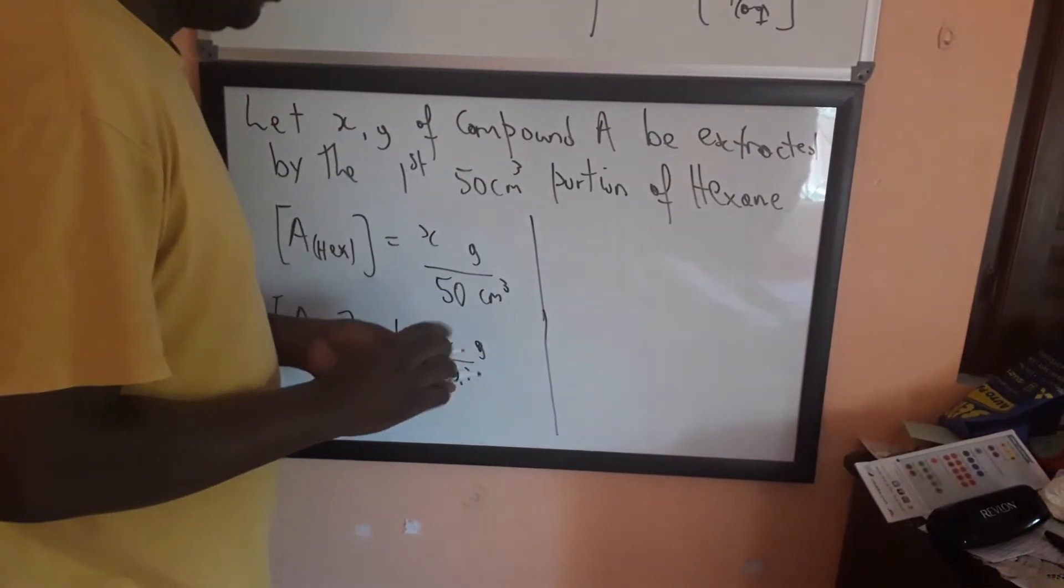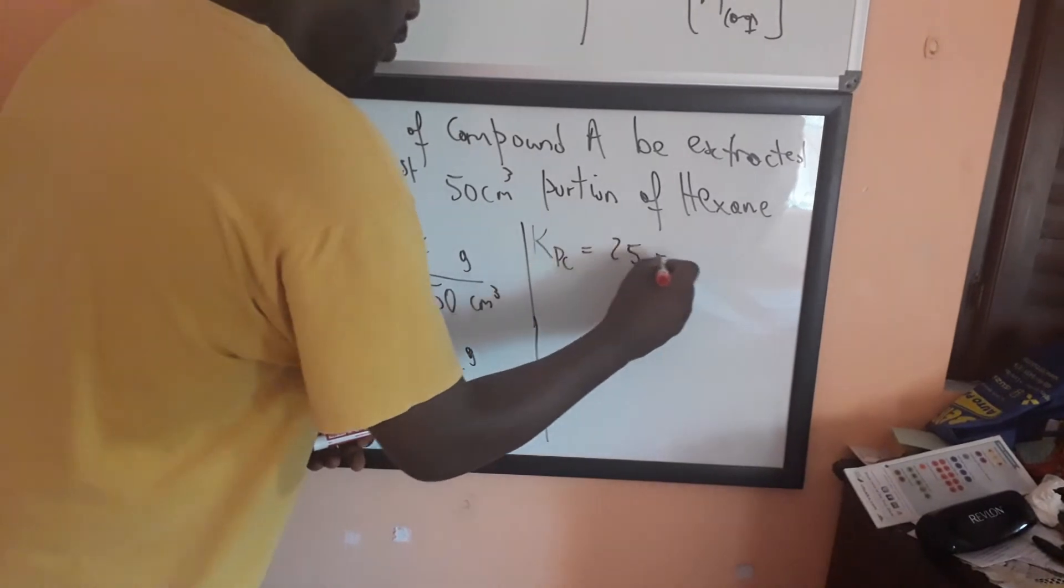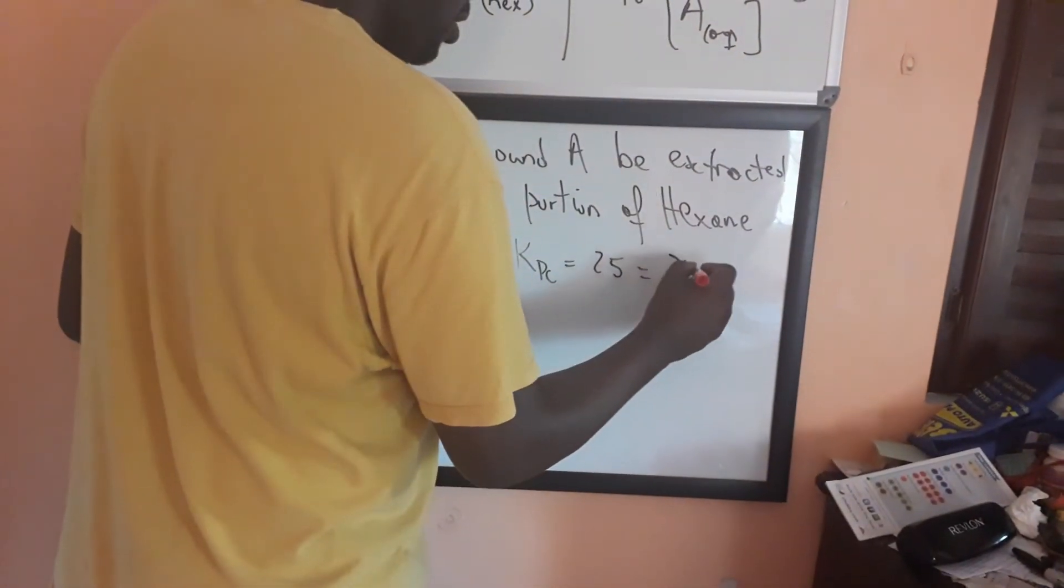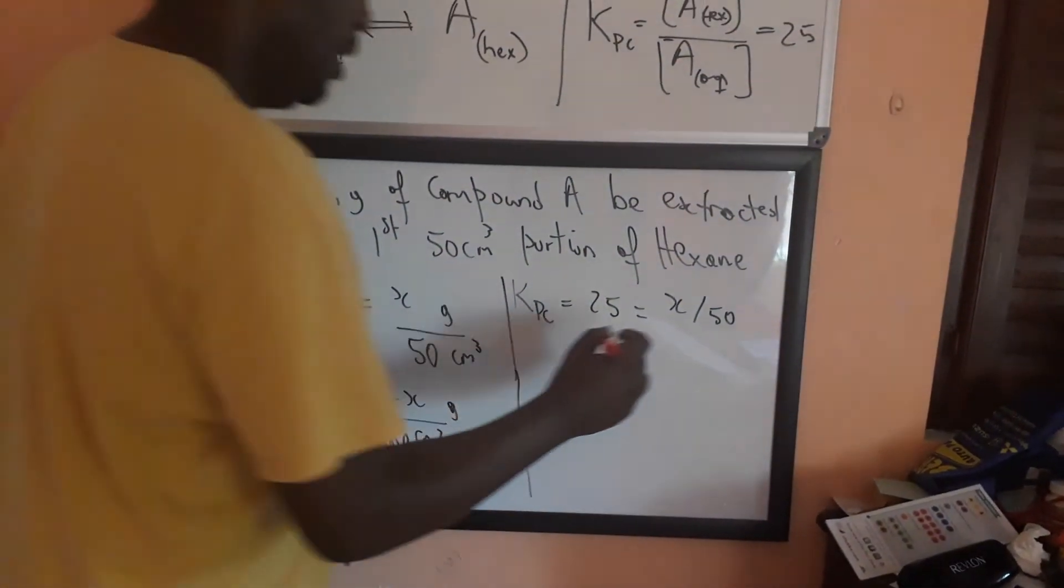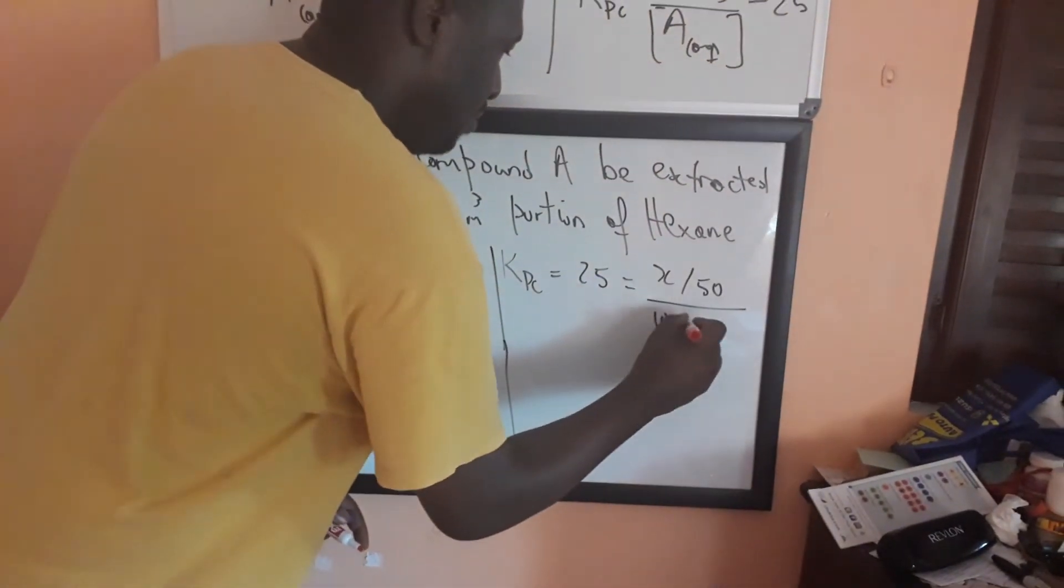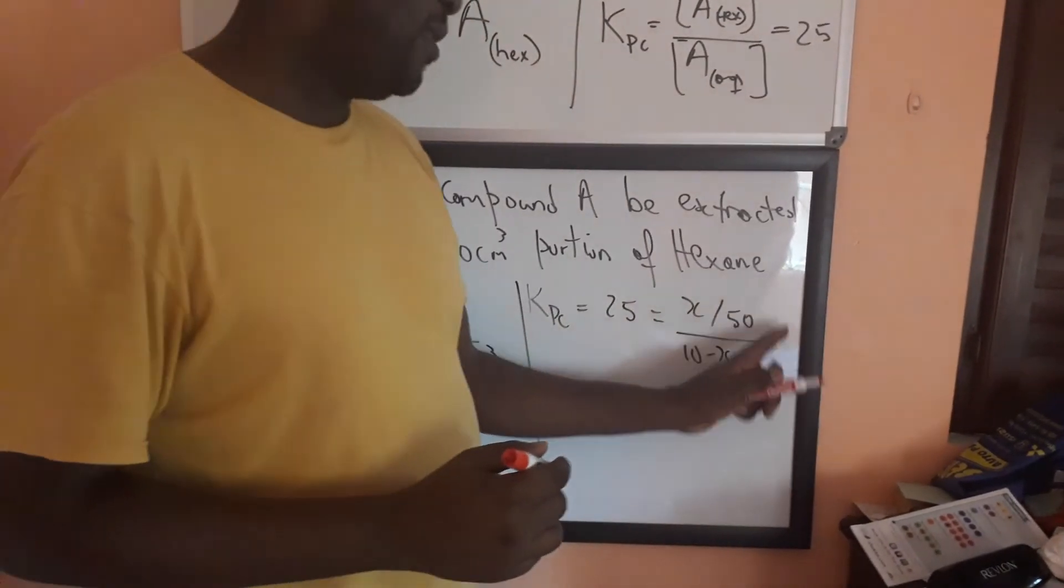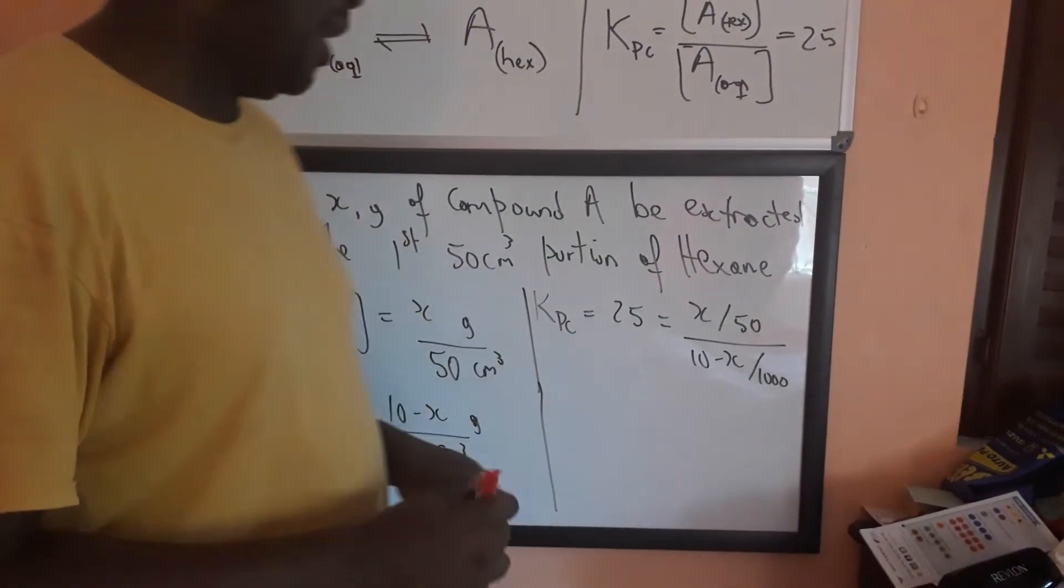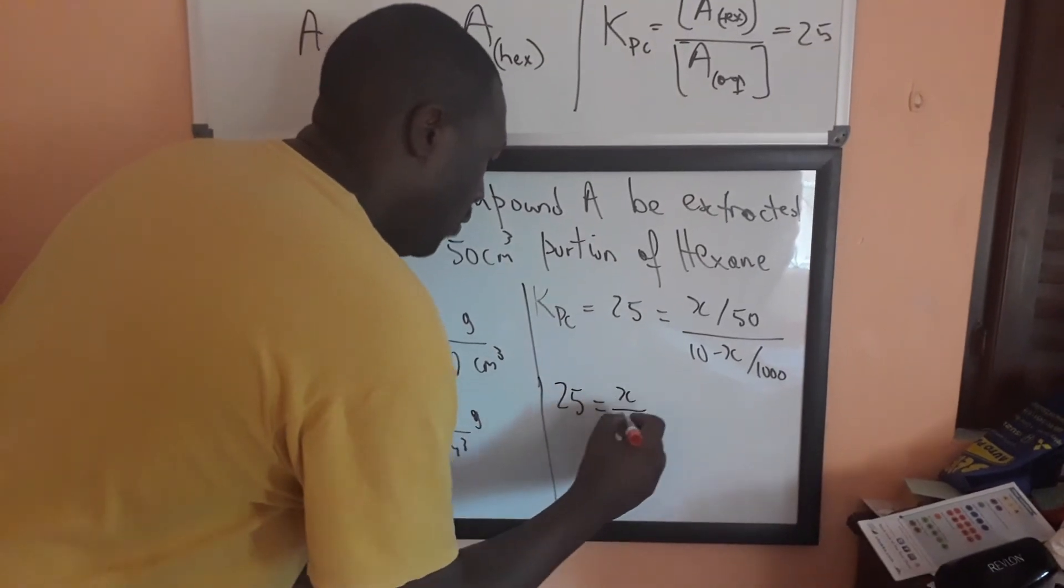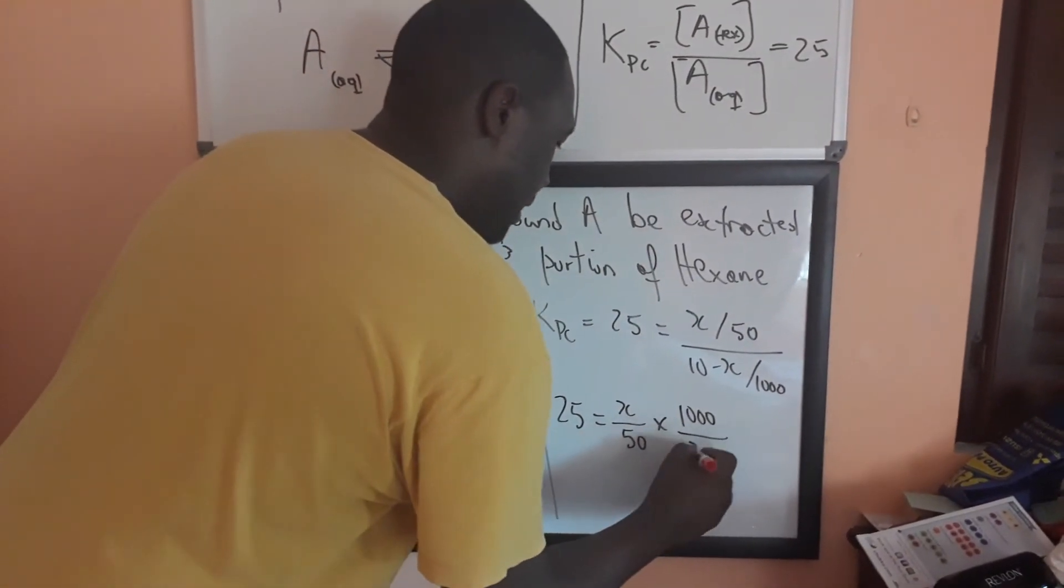Now, what we're going to do, we're going to say, KPC is equal to 25, which is equal to the concentration of A in hex, which we know is now X divided by 50 gram per centimeter cubed, divided by A in aqueous solution, which is 10 minus X over 1,000 cm³. Now, because both of these have units of grams per centimeter cubed, the units are going to cancel, and then you're going to have no units for your answer. So, 25 will be equal to X over 50, and inverting the denominator there, so make it 1,000 over 10 minus X.